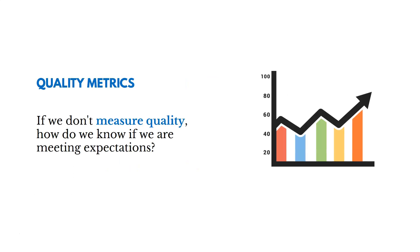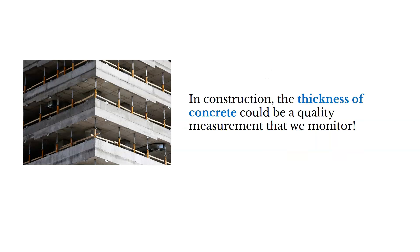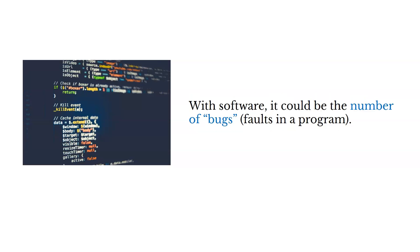Quality metrics — if we don't measure quality, how do we know if we are meeting expectations? We've got to measure it some way. An example of a quality metric in construction is the thickness of concrete — that could be something we monitor to determine if we have the right quality levels. With software, it could be the number of bugs or faults in a program.